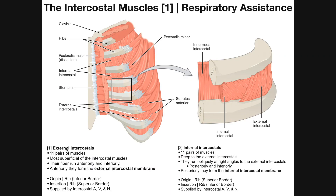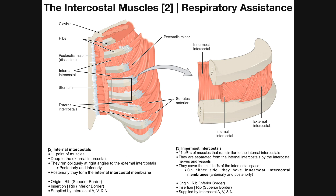The external intercostal muscles are muscular in the posterior portion up until a certain point anteriorly, and then in the most anterior portion they become the external intercostal membrane. The internal intercostals are muscular anteriorly, but in the posterior part they turn into the internal intercostal membrane. The innermost intercostals are muscular in the middle three quarters of the intercostal space, and on both the anterior and posterior sides they become the innermost intercostal membranes.